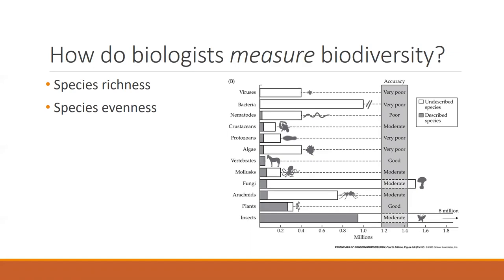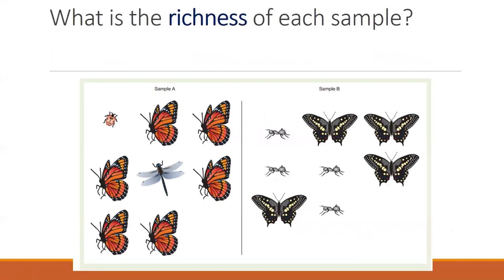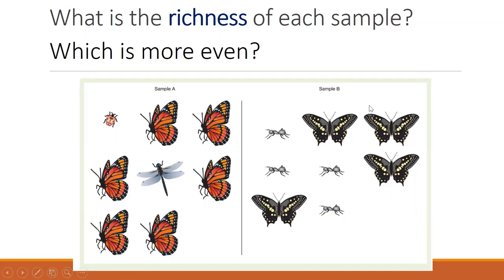We measure biodiversity through species richness and species evenness. Species richness is simply the number of different species — Sample A with three species is richer than Sample B with two. But Sample B might show more evenness if abundance is balanced across species rather than dominated by one. These two measures — richness and evenness — are the aspects of biodiversity that biologists work to understand.